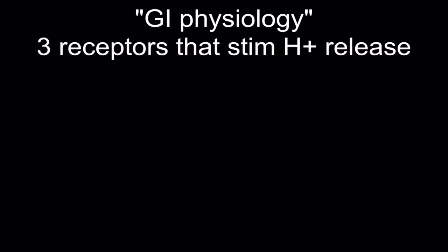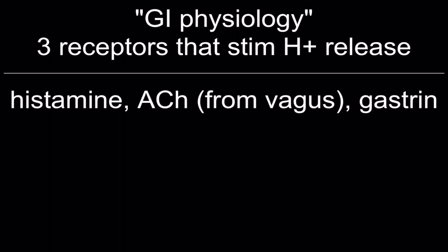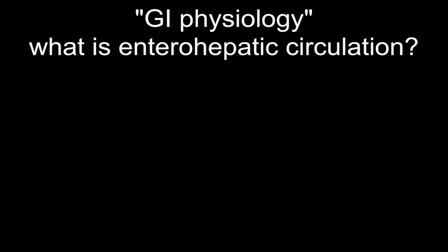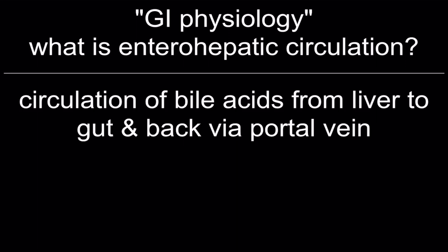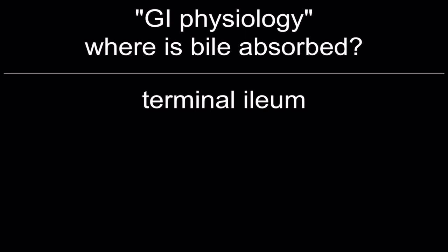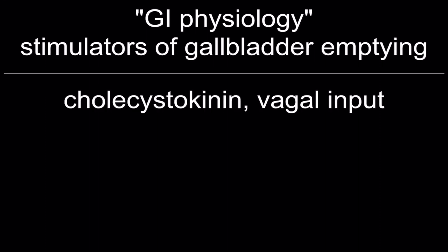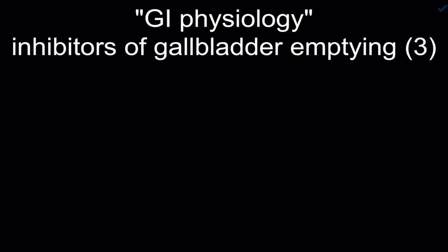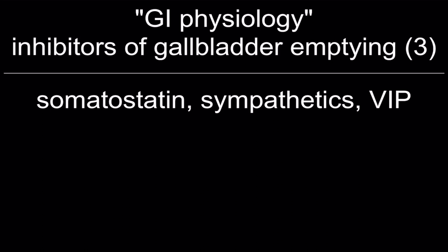Three receptors that stimulate hydrogen release: histamine, acetylcholine from the vagus, and gastrin. Enterohepatic circulation: circulation of bile acids from the liver to gut and back via the portal vein. Bile is absorbed at the terminal ileum. Stimulators of gallbladder emptying: cholecystokinin and vagal input. Inhibitors of gallbladder emptying: somatostatin, sympathetics, and VIP.